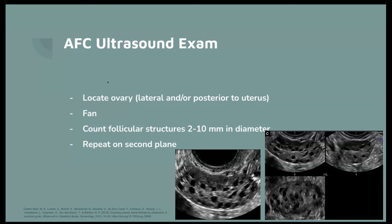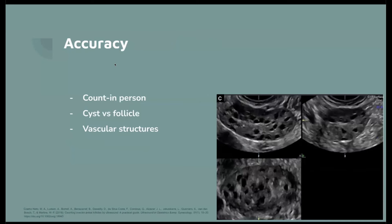It's important to repeat the count on the second plane — get the best view on the first plane, count, then repeat on the second plane to verify. The accuracy of AFC can be tricky since you're counting small dark structures. The best way to increase accuracy is to count in person. Even though videos of fanning through the ovary can be helpful in telehealth settings, when you're in person you can better differentiate between a follicle and a cyst, and can use Doppler mode to differentiate vascular structures. In person, if you slightly probe the structure and it moves with the ovary, it's a follicle; if it doesn't move, it's more likely a cyst.